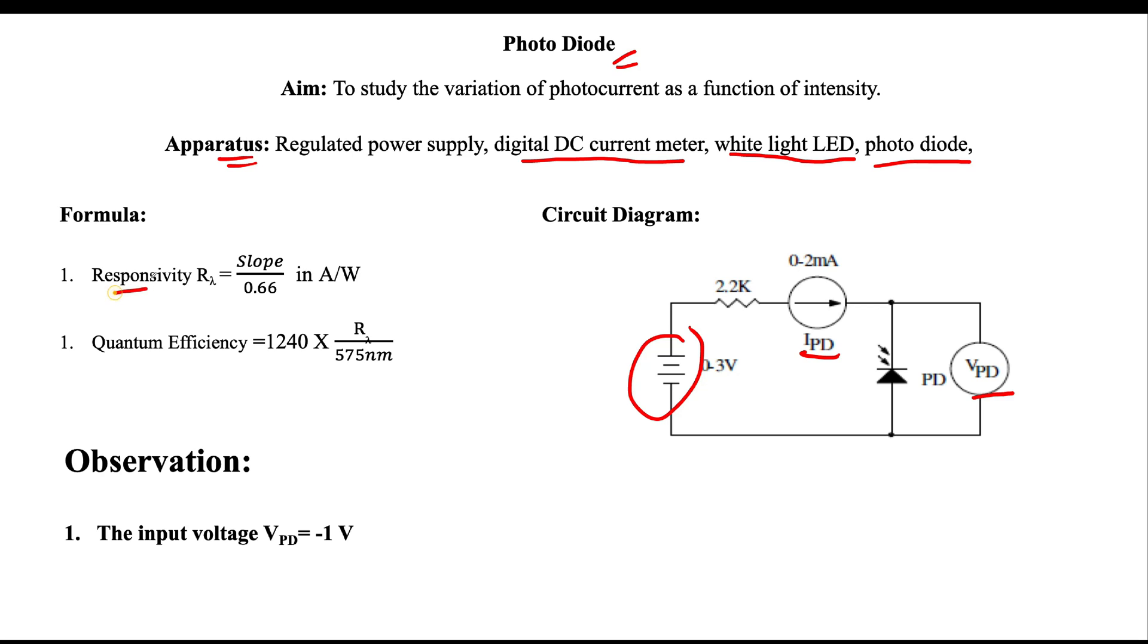For that, we have a formula: R_lambda equals slope divided by 0.66. The slope will be obtained from the graph. Once you calculate the slope, substitute it in this equation and calculate the responsivity, and then substitute in this equation to get the quantum efficiency. The observation for this experiment is to maintain input voltage always at 1 volt.